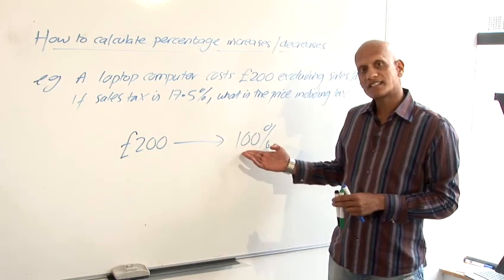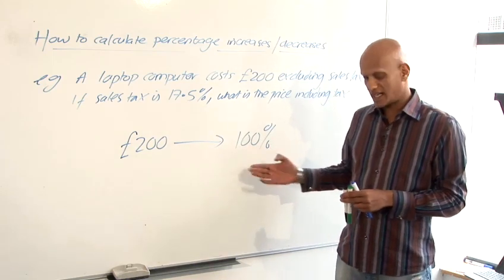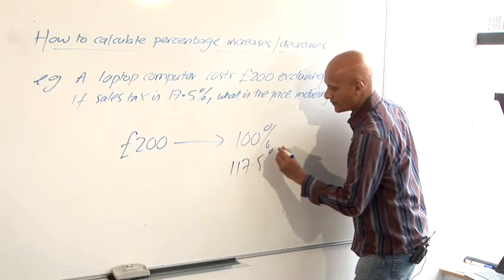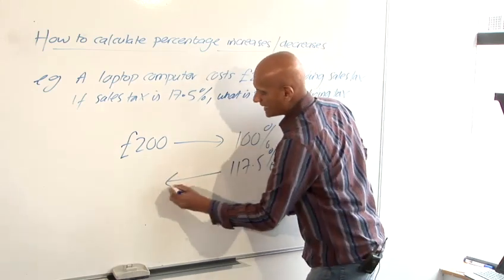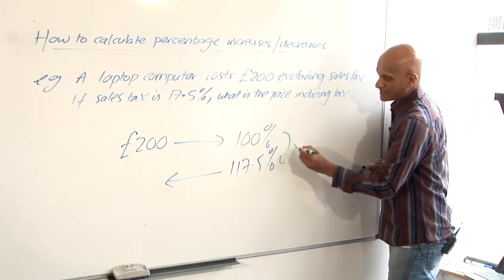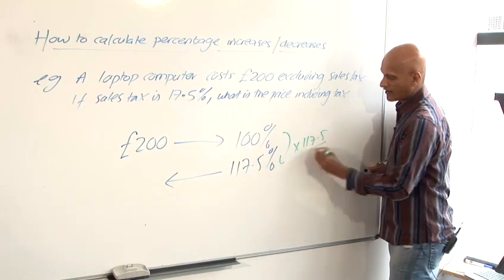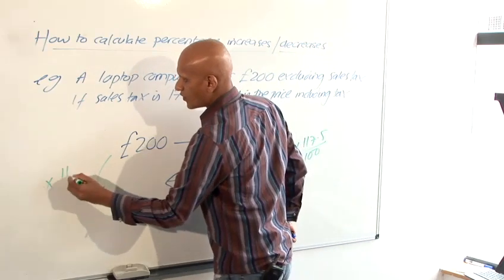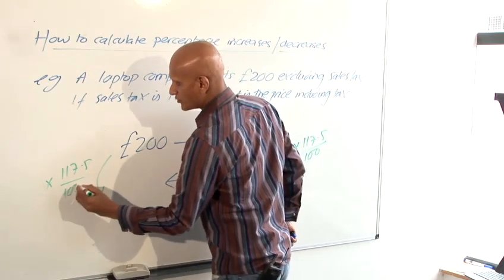So I want the original price plus another 17.5% so I want to work out 117.5%. And now again that same trick, the scale factor on this side is times 117.5 over 100 and so we're going to use the same scale factor on this side times 117.5 over 100.